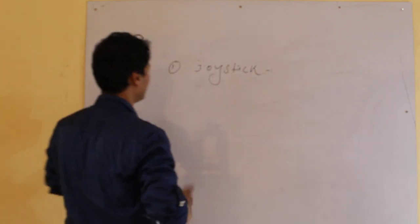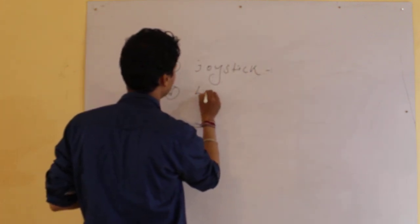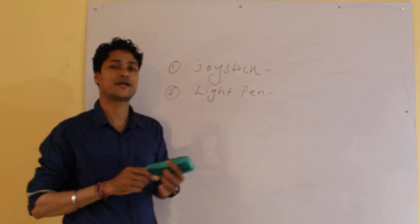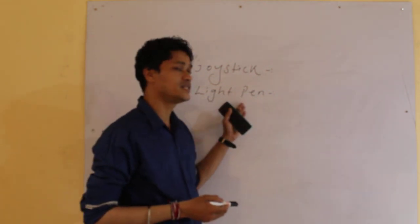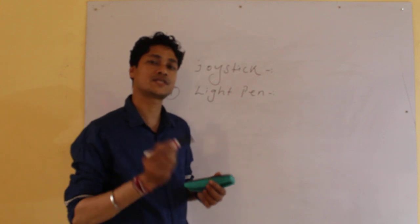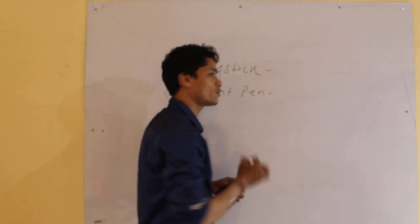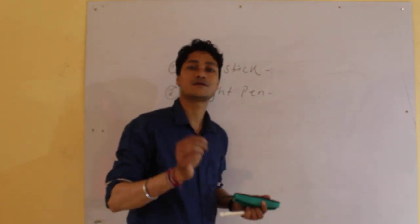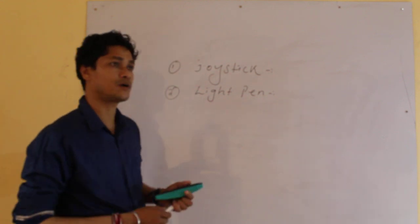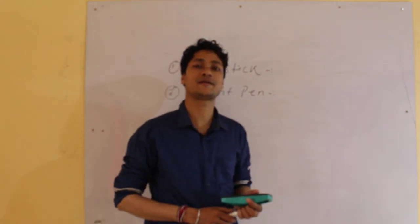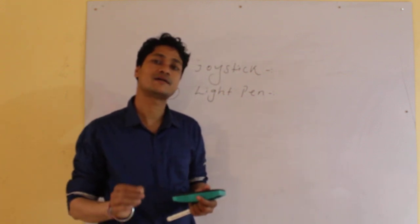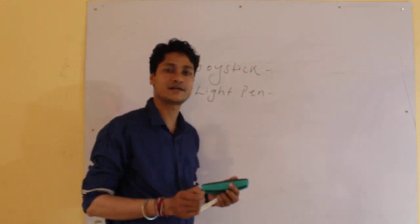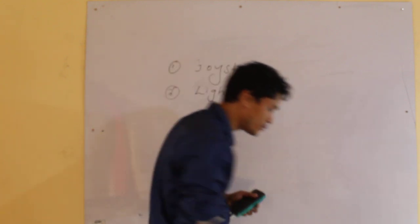After this joystick, there is the light pen. Children, light pen means it is a digital pen. Here I am using this pen to write on this whiteboard, you are using the board pen to write on your notebook, but in computer it uses a digital pen by which we can write on the digital boards only. This light pen is used to write something by using the digital board.